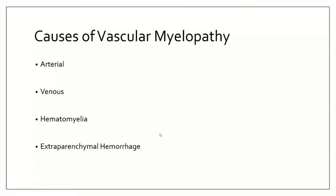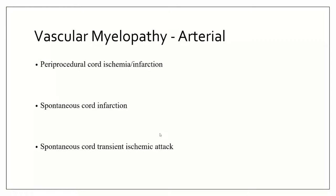So remember the classification of vascular myelopathies: arterial, venous, hematomyelia, and extraparenchymal hemorrhage. When thinking about arterial vascular myelopathies, consider three major things: periprocedural cord ischemia or infarction — this is the most commonly encountered; spontaneous cord infarction, which is the equivalent of ischemic stroke in the brain; and spontaneous cord TIAs. Spinal cord TIAs are extremely rare and very difficult to prove, so we'll focus on the first two.